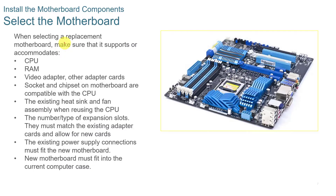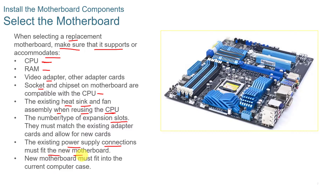When selecting a replacement motherboard, make sure it supports all your current components — the CPU, RAM, and video card. The socket and chipset must be compatible with your CPU, and existing heat sinks, fans, and assemblies need to work in the new motherboard. The number and type of expansion slots must match, the existing power supply connections must fit, and it must physically fit in the new case. That's the most important thing — it has to fit in the new case.